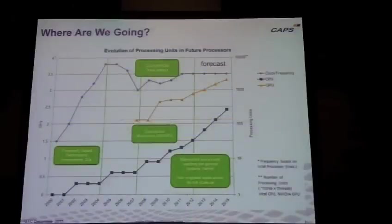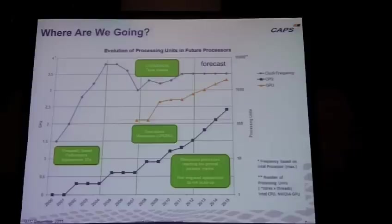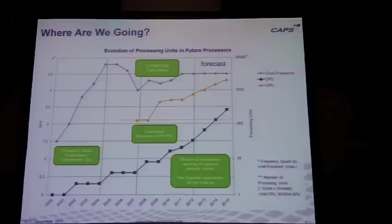One of the questions we had on manycore is: okay, we talk about manycore coming, everybody mostly agrees about that, but when? Can we put a date on manycore being a generalized problem? What we did is draw some pictures. The light blue is the gigahertz of Intel processors, and after 2012 — that's a forecast — we are forecasting this will not increase, for energy and technological limitation reasons.